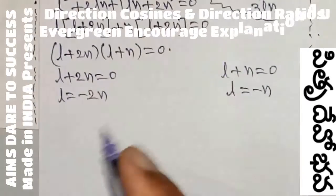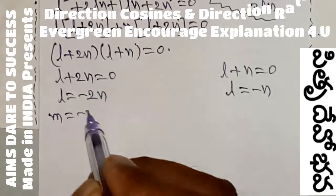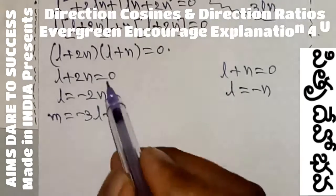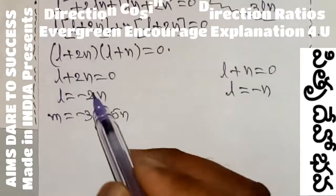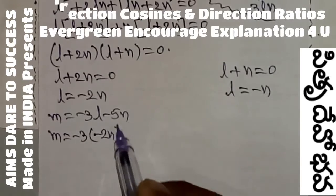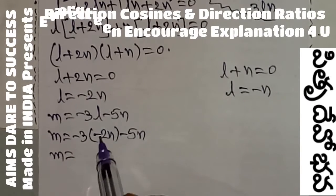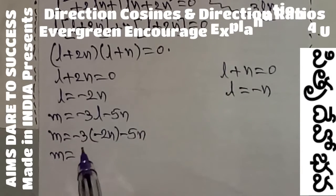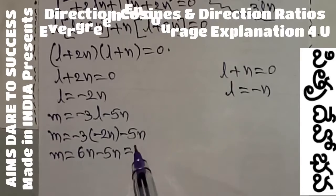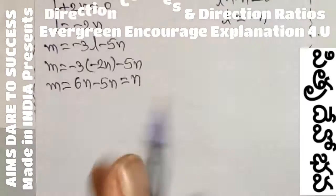minus 3L minus 5N. In this M value I want to substitute the L value. That is M equals to minus 3 into L value minus 2N, minus 5N. So M equals to minus into minus plus 3, giving 6N minus 5N. That is 6N minus 5N is N. So M value we got N.